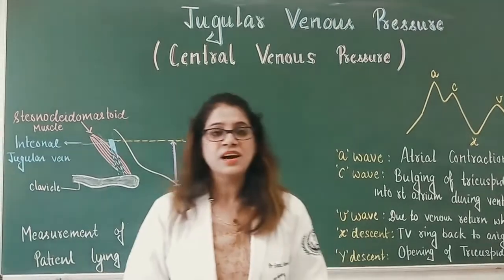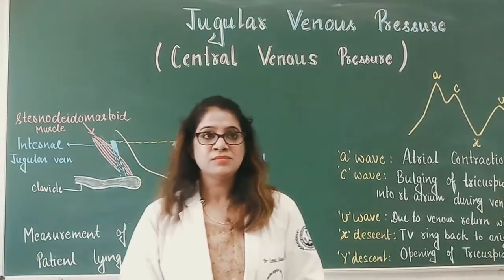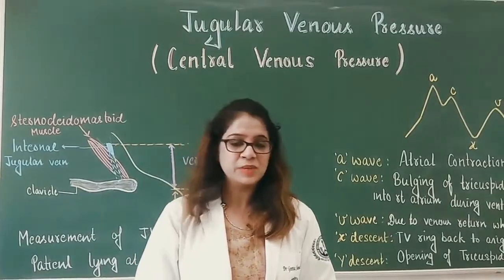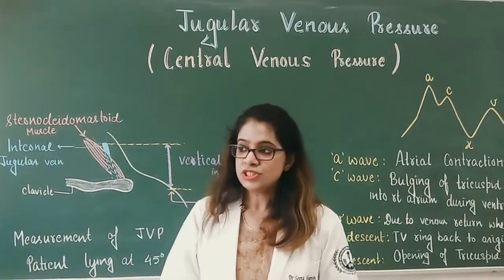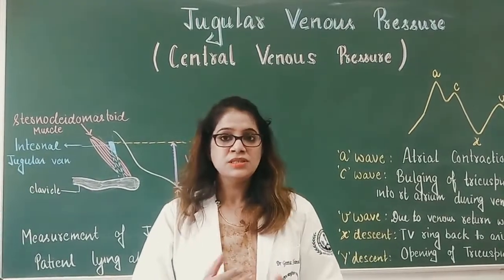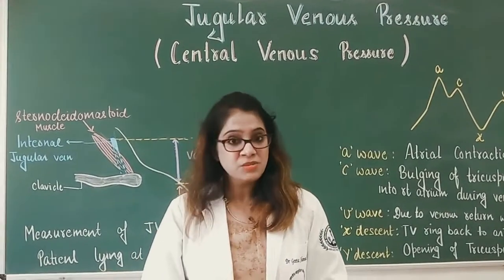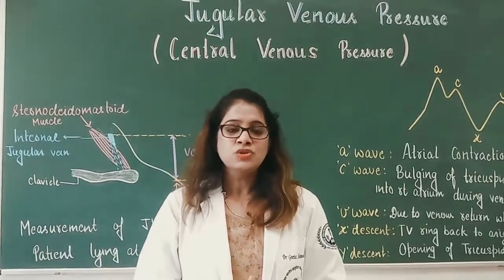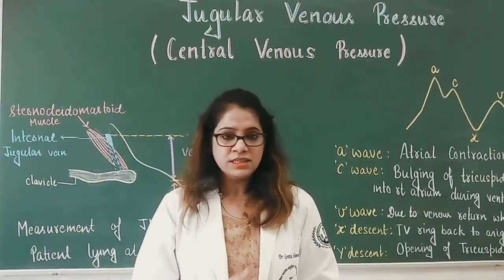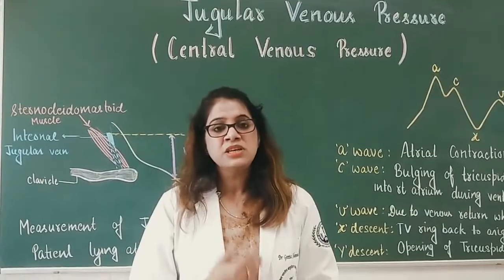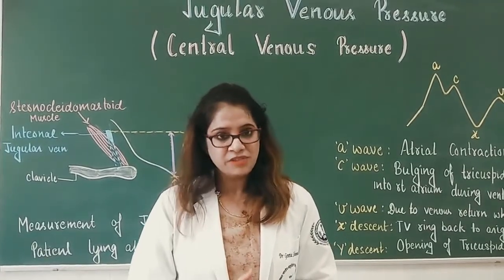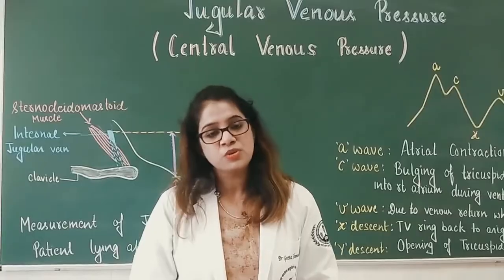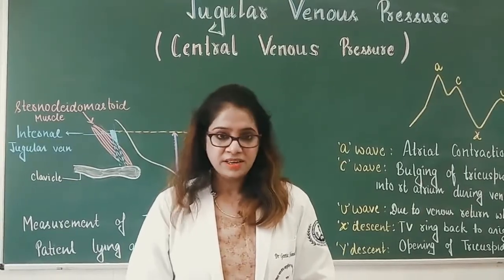Today we will discuss central venous pressure or jugular venous pressure. CVP or JVP is the estimation of the pressure of the right atrium. We actually measure the pressure of the internal jugular vein, which is approximately equal to the pressure of the right atrium.